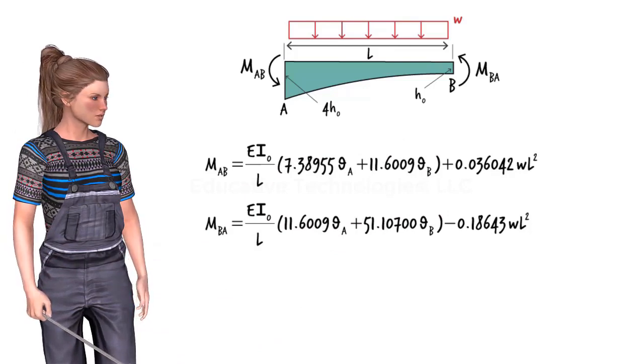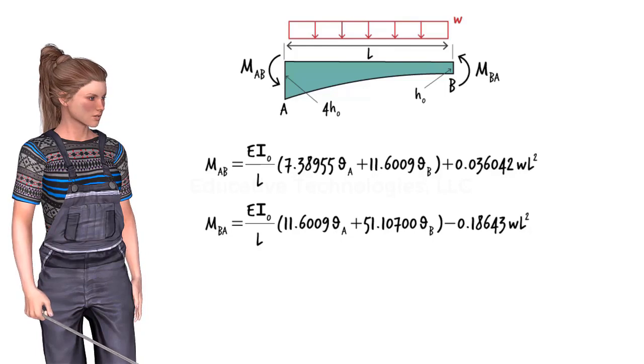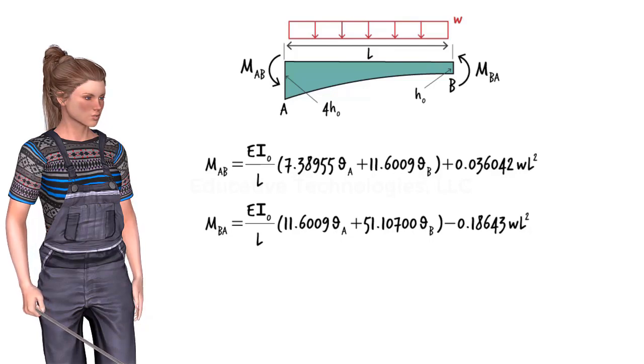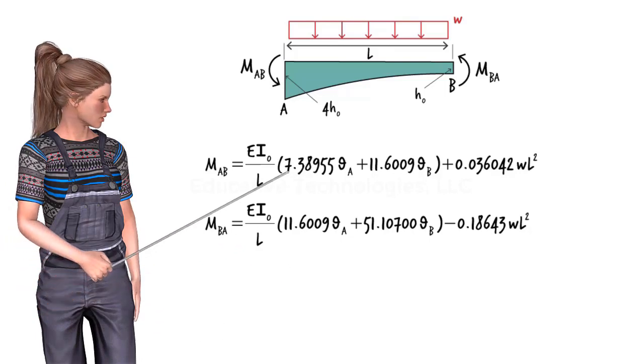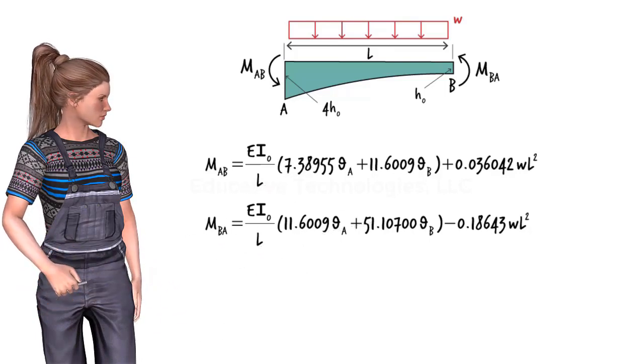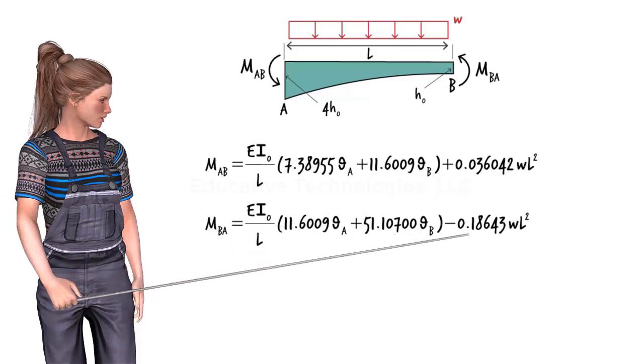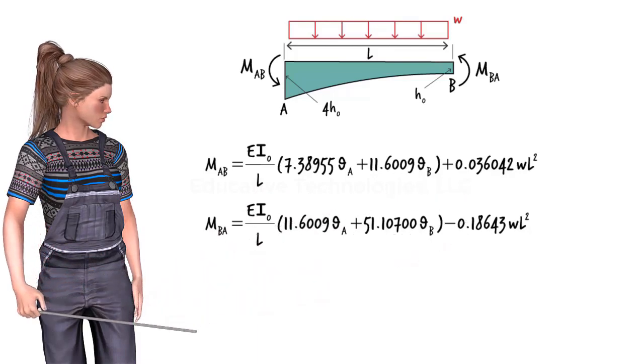To arrive at the correct equations for this beam configuration, we can either go through the derivation process explained in video SA58A, or we can take a shortcut. What is the shortcut? Just swap the coefficients of the end rotations and the fixed end moment terms between the two equations, like this.